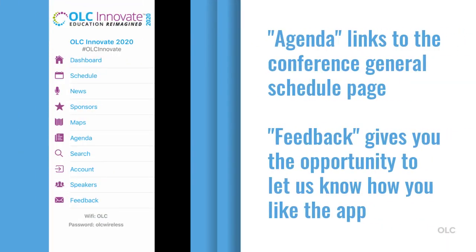There are two other items on the main menu that don't show up in the tiles. The agenda item will show you the general schedule for the conference — it's a link that will take you back to the OLC website. The feedback item takes you to a form and gives you the opportunity to let us know how you like the app and to suggest features for development in the future.